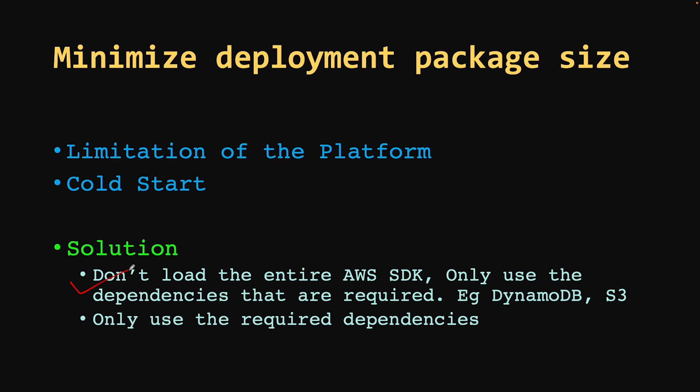The second point for minimizing package size is to use dependencies only when required. Developers have a tendency to include open source dependencies to make life easier, but we have to avoid that practice when working with Lambda. For example, a library like Lombok is used to automatically generate getters, setters, and improve code brevity — but adding such extra dependencies increases your artifact size. Use external dependencies judiciously. These were the best practices I suggest you follow when developing with Lambda. Subscribe to the channel for more videos. See you in the next one!